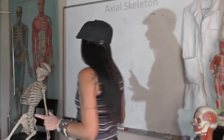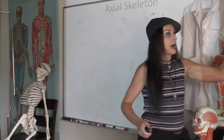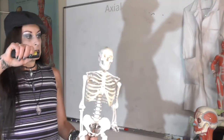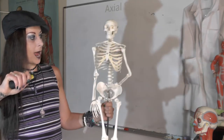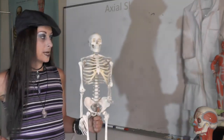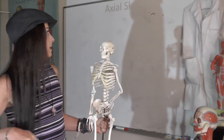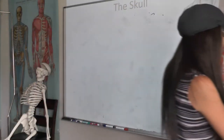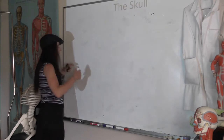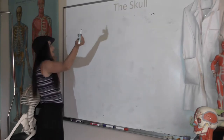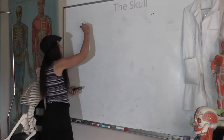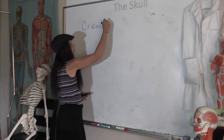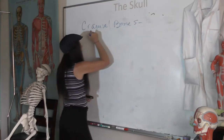The axial skeleton is everything found on the long axis of the body: the bones of the skull, the bones of the vertebral column, and the bones of the thoracic cage. We've actually already met most of the axial skeleton in bones of the day. What we did not talk about was the skull. The skull has two parts: the cranium, or cranial bones, and then the face that contains the facial bones. Your cranial bones are all bones that are touching your brain.